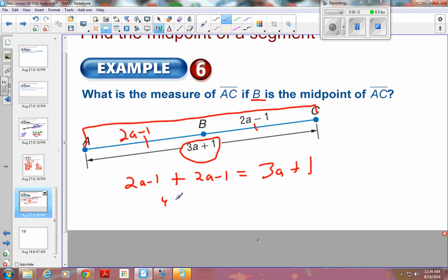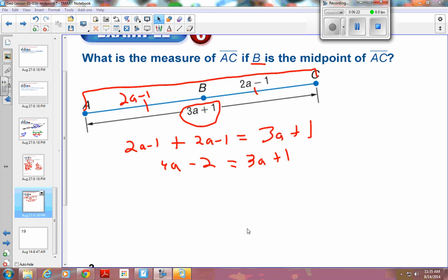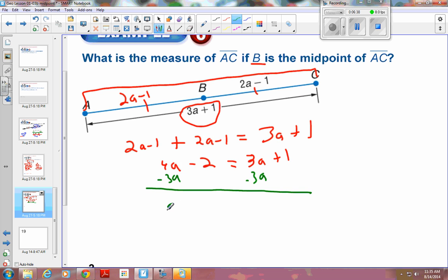So this becomes 4A minus 2 is equal to 3A plus 1. Get our variables on the same side. 4A is bigger than 3A, so I move the 3A. I'm going to subtract 3A from this side, subtract 3A from this side. That becomes 1A minus 2. The 3A's drop out is equal to 1.